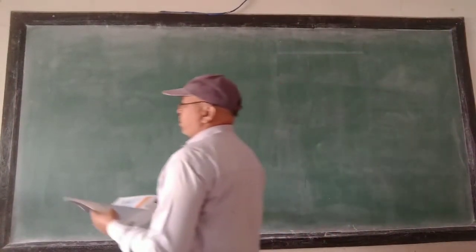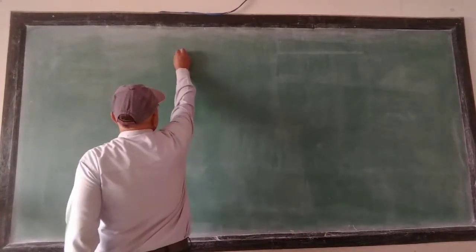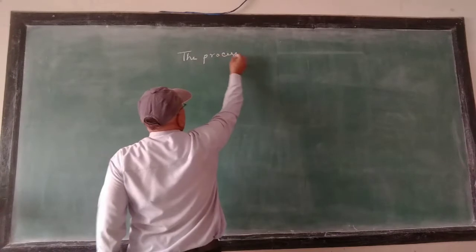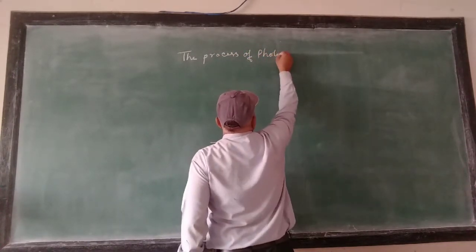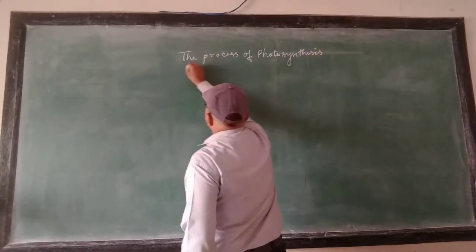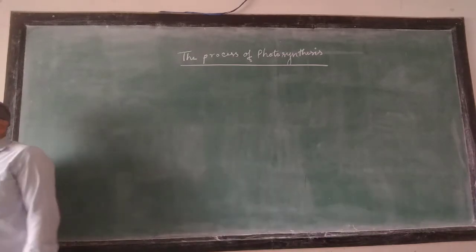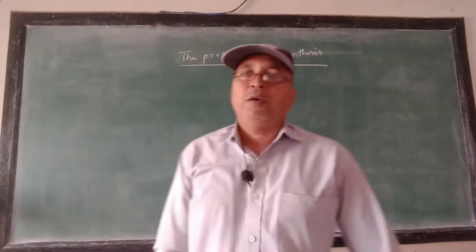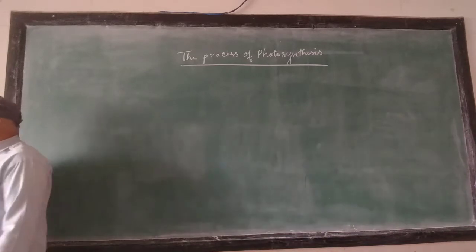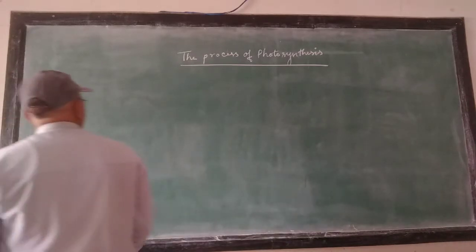The process of photosynthesis is a biochemical process. A biochemical process means a chemical process that takes place or occurs in a living being, or that involves a living being. So what happens actually in this?